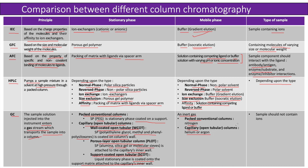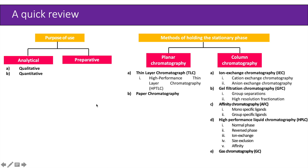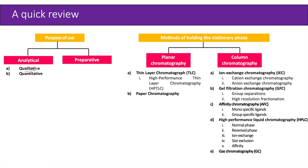The sample for gas chromatography should not contain ions. For a quick review: based on purpose of use, chromatography can be categorized as analytical or preparative. In analytical chromatography, only analysis of the sample is done, whereas in preparative chromatography, the separated components are also collected for further use. Analytical chromatography includes both qualitative and quantitative analysis — qualitative identifies presence or absence, while quantitative also calculates the amount of the specific component.